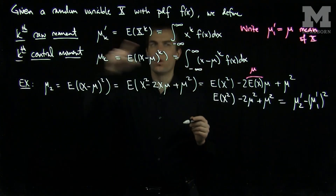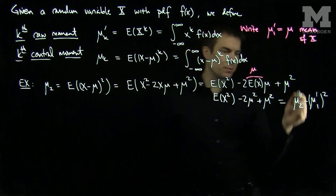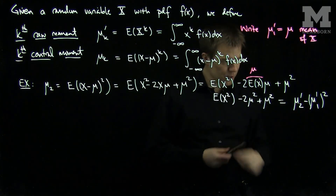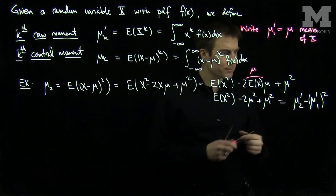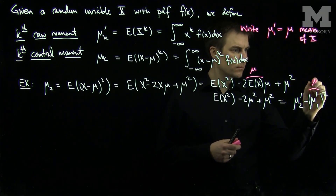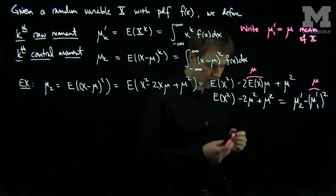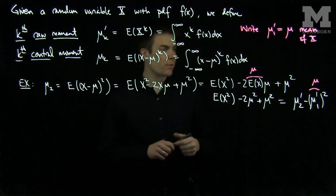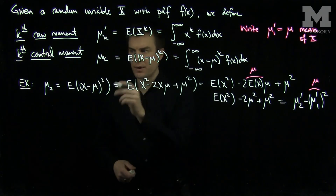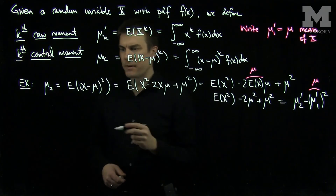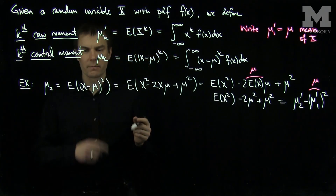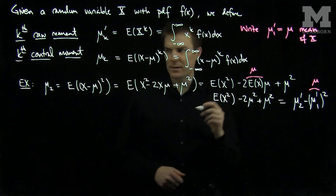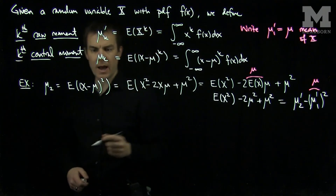Then I'll have minus mu_1 prime quantity squared, where mu_1 prime is the same as mu. And of course this is the standard formula we know for the variance of a random variable x.